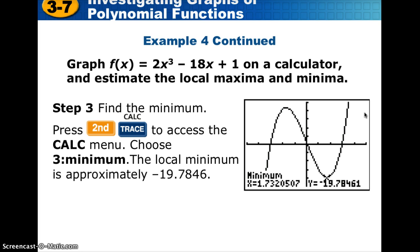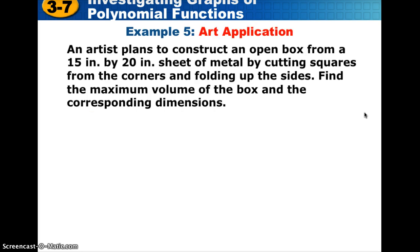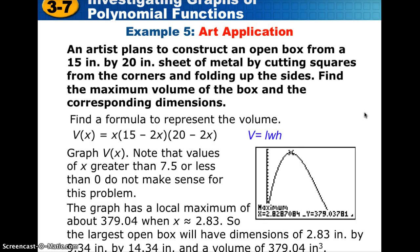An artist plans to construct an open box from a sheet of metal 15 by 20 inches by cutting squares from the corners and folding up the sides. Find the maximum volume of the box and the corresponding dimensions. Start with a picture, then set up the volume of the open box. Using the second trace feature on your calculator, we find the maximum volume is 379.04 cubic inches at x equals 2.83 inches. Plug x back in to find the width and height — giving you all three dimensions. That's it for section 3.7; see you for section 3.8.